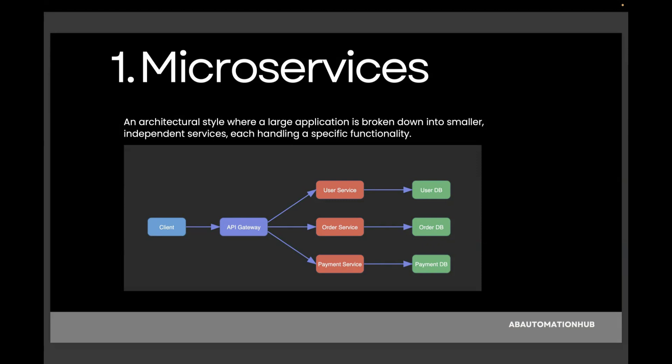What is the benefit of using microservices? If your payment service crashes, your user service will still work. In this sample diagram, you can see we have a separate service for user service, a separate service for payment functionality, and for the order service — and each one of them has its own database.